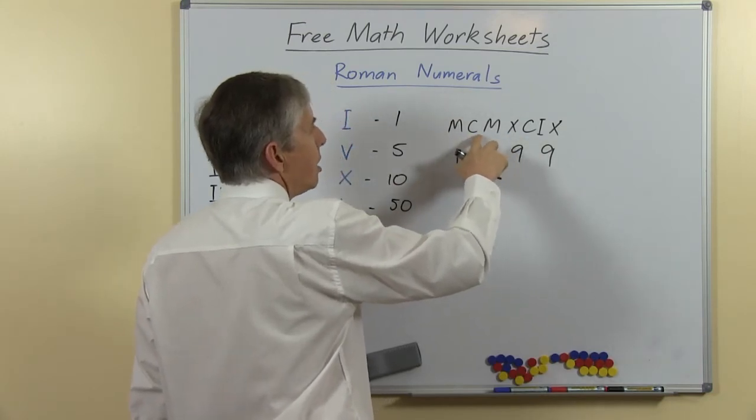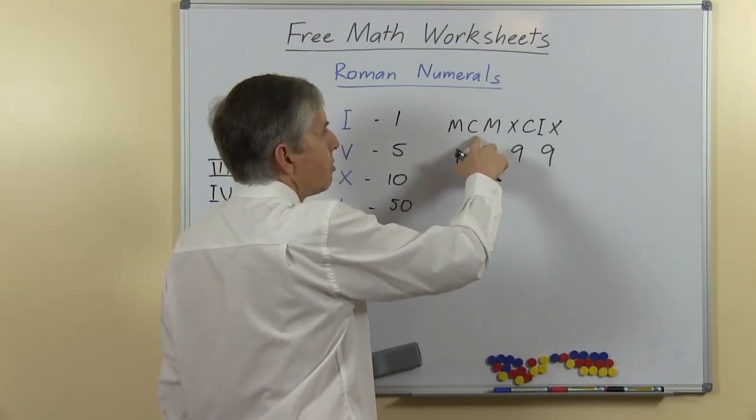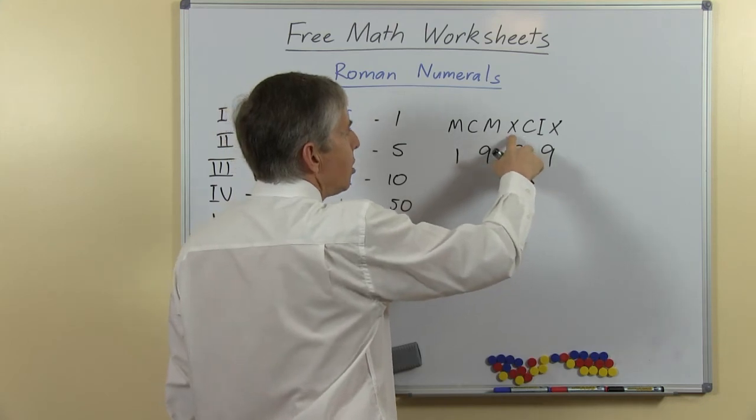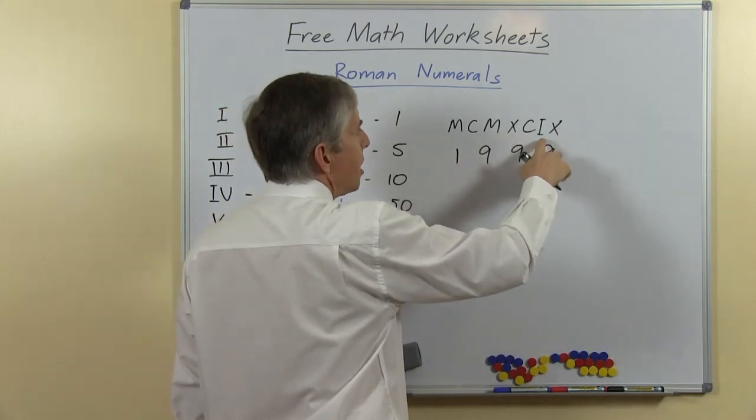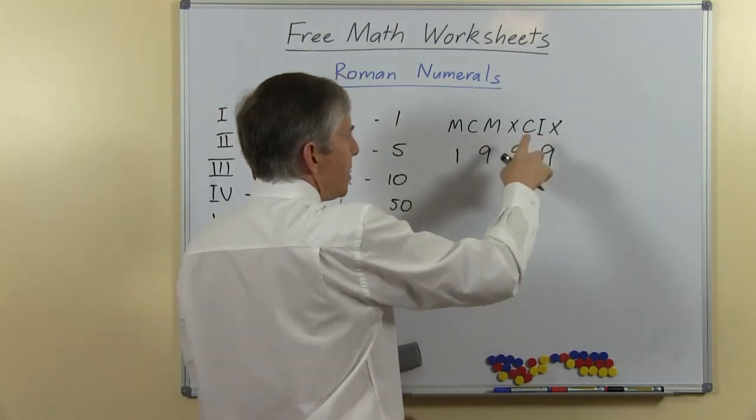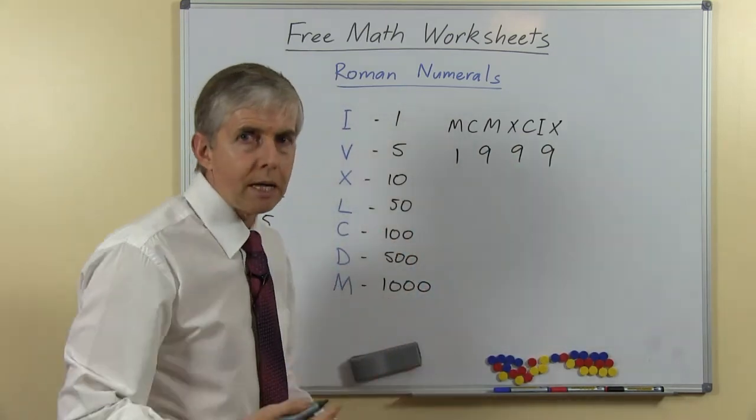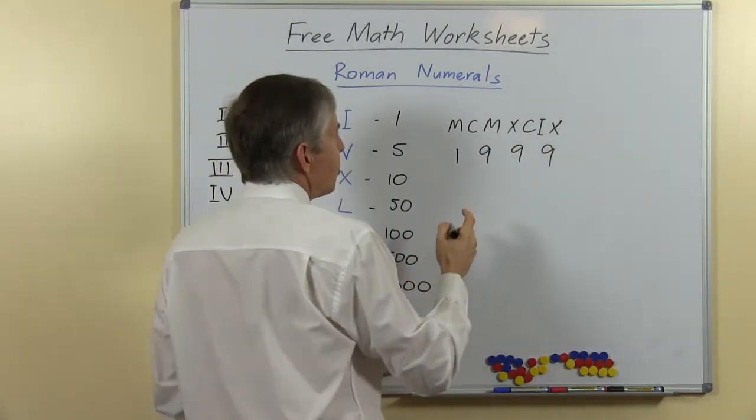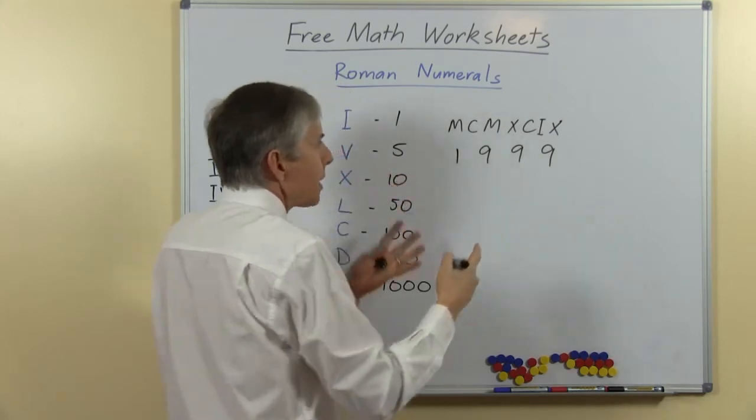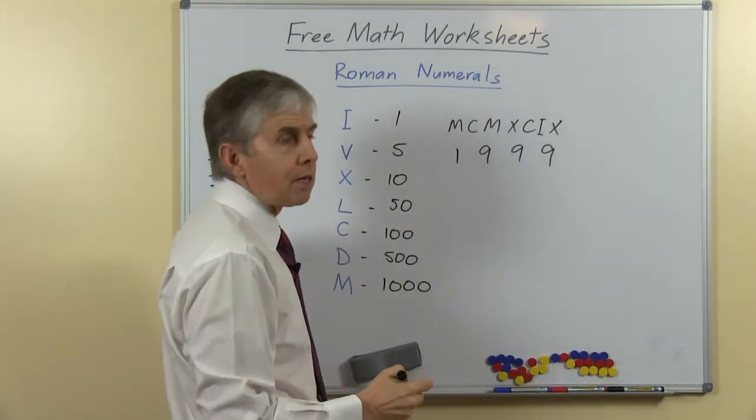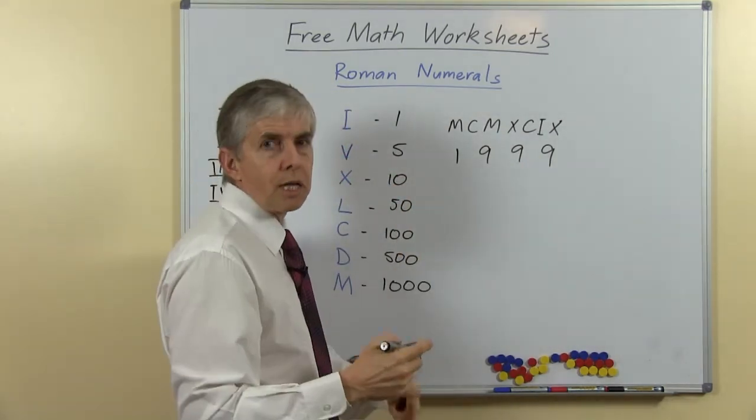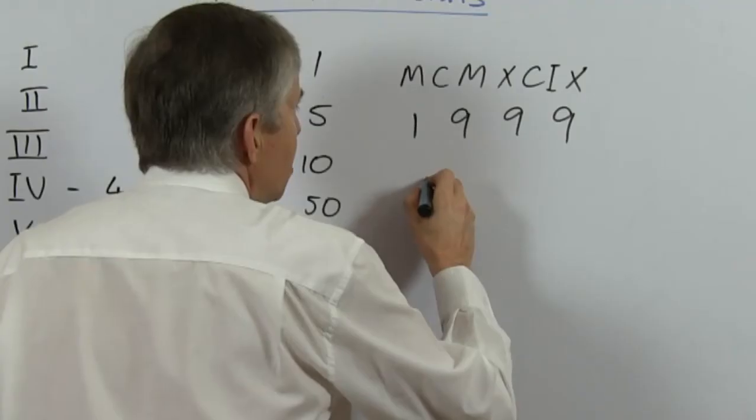So here we have 100 in front of 1000, so it's 100 less than 1000. Then we have 10 less than 100 and 1 less than 10. This of course is a fairly complicated example, so you wouldn't start with this with students. But as I mentioned before, Hollywood movies have been using Roman numerals to indicate the year of production for some time, and so you'll find movies with that.